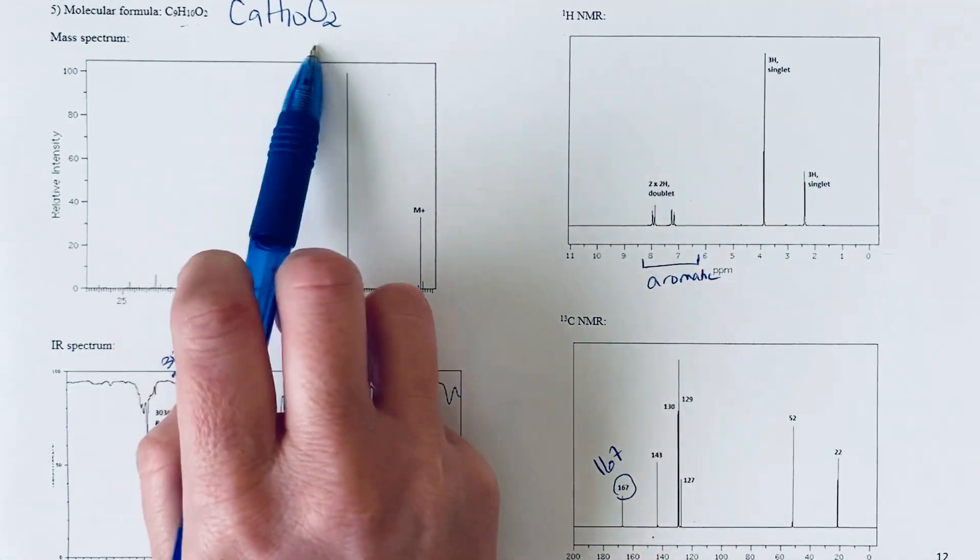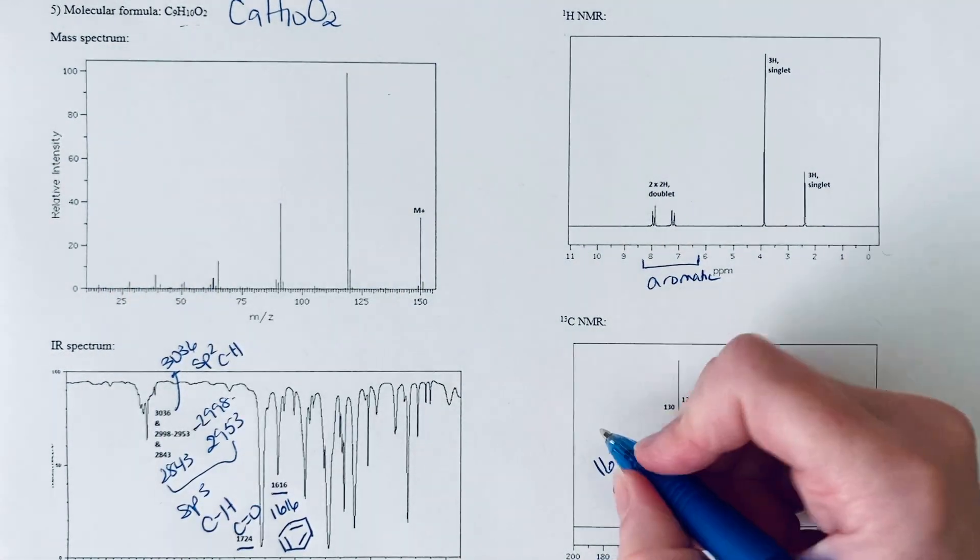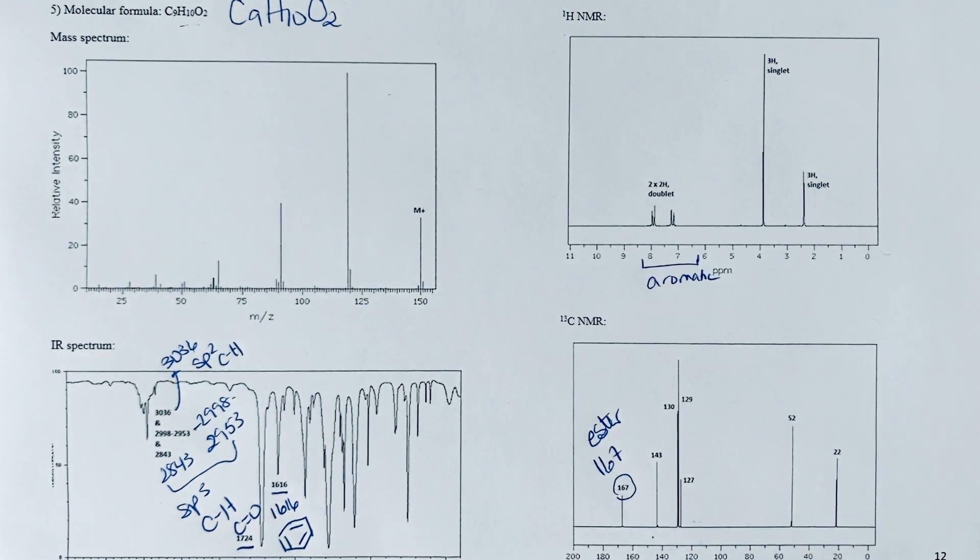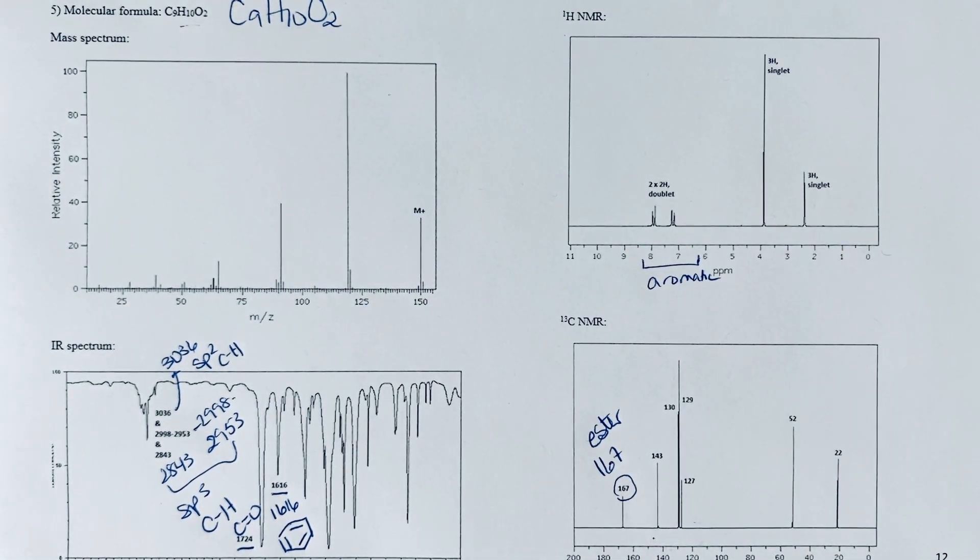When we see a carbonyl, we might want to look to the carbon-13 and find that signal at 167 to get an idea of what type of carbonyl this is. This is on the lower end for a carbonyl, so this is where we'd expect to see either an ester or an amide. We clearly don't have nitrogen in our structure, so it's going to be an ester, and that fits our O2.